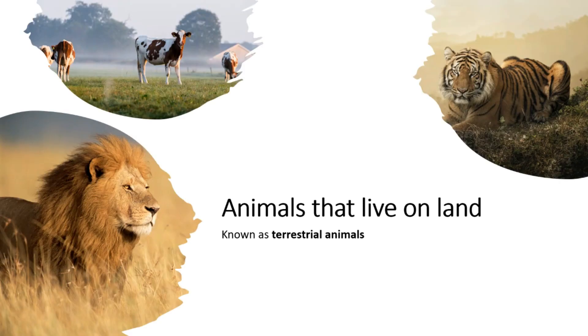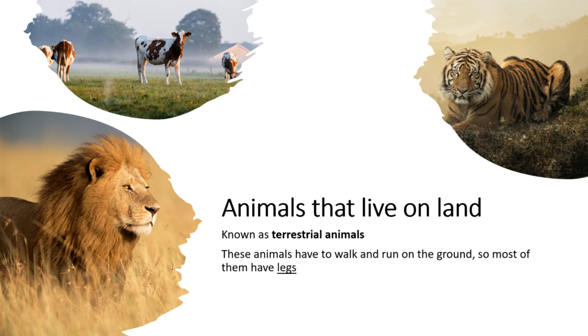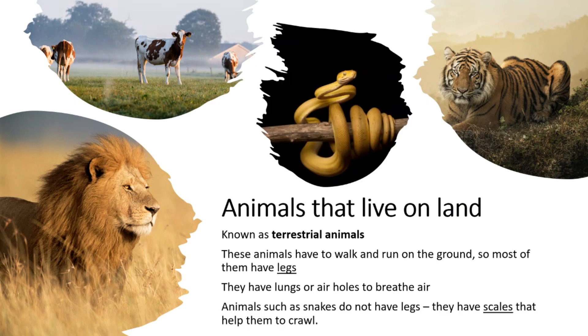Animals that live on land are called terrestrial animals. Lions, tigers, cows are some examples of terrestrial animals. These animals have to walk and run on the ground, so most of them have legs. They have lungs or air holes to breathe air. Animals such as snakes do not have legs. They have scales that help them to crawl.